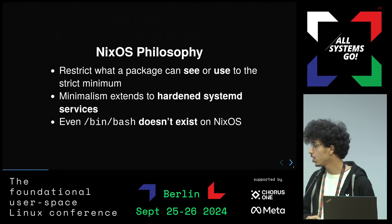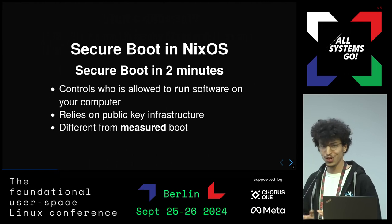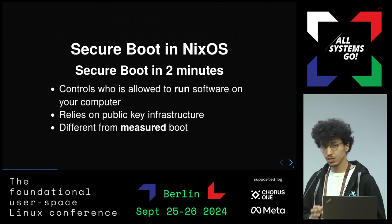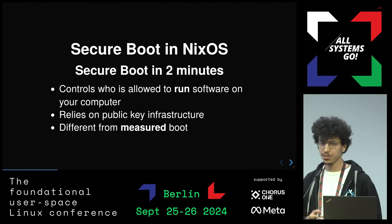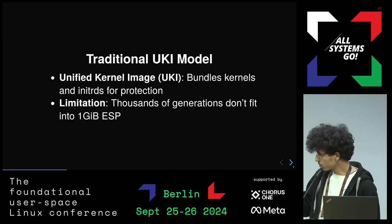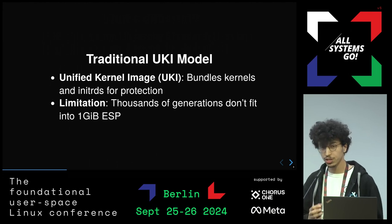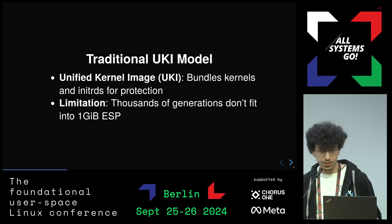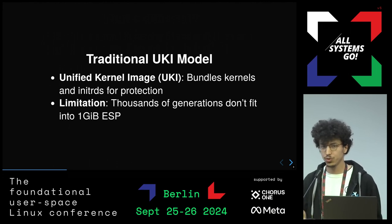Those design decisions trickle down to the secure boot implementation. Secure boot controls who is allowed to run software on your computer — you sign binaries, and if the signature is allowed using public key infrastructure, the binary can be loaded. With the UKI model proposed by systemd, you bundle kernels and initrds together for protection and sign the whole thing. The problem is that because we have this generation system, if we synthesize a UKI for every generation, you need 10 gigabytes of ESP to hold more than 100 generations.